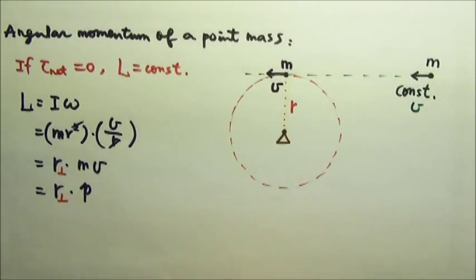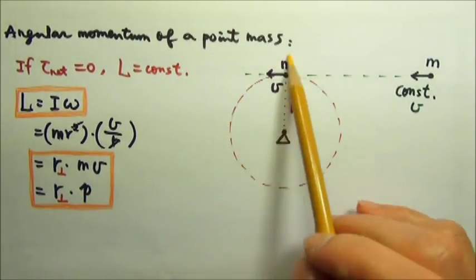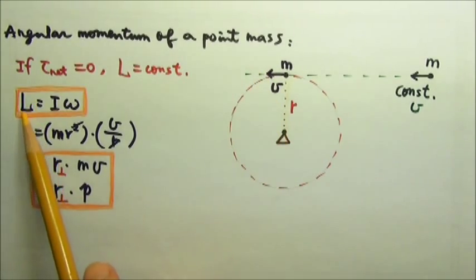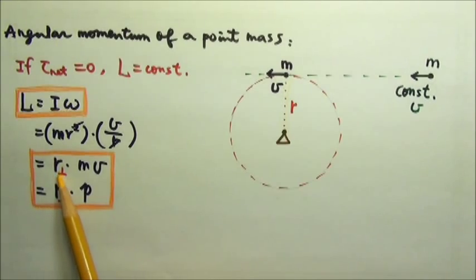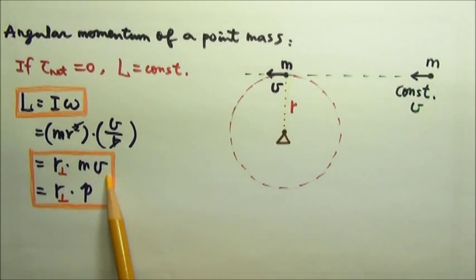So we will write it like this. So for a point mass, we can use the angular momentum equals to I omega or the perpendicular R times MV or the perpendicular R times momentum.